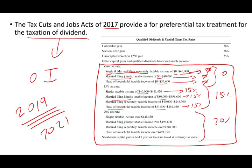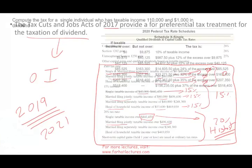Now we have a third rate, which is twenty percent. If you are single and make more than four hundred forty-one thousand four hundred fifty, you pay twenty percent. The same concept applies for married filing jointly — when you go above four hundred ninety-six thousand, it becomes twenty percent. So the highest rate is twenty percent.